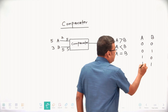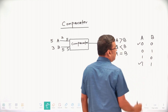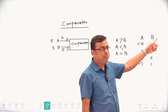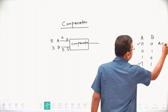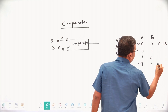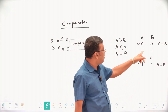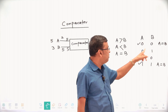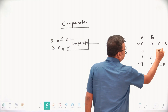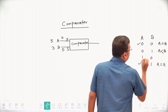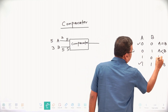If you look at this: 00 and 11 — obviously A equal to B, this bit is same as this bit, equality condition. If A is 0 and B is 1, obviously A is less than B, the condition is A less than B. And in case of A is 1 and B is 0, in this combination A is greater than B.